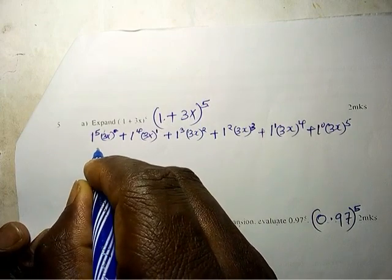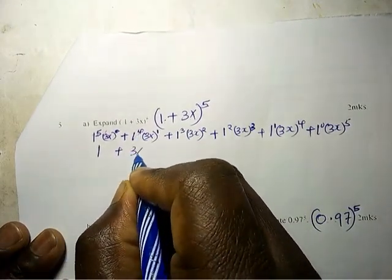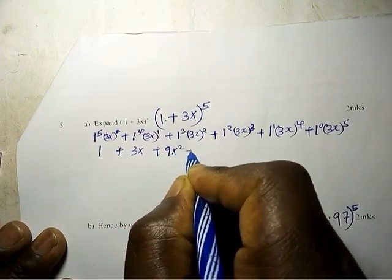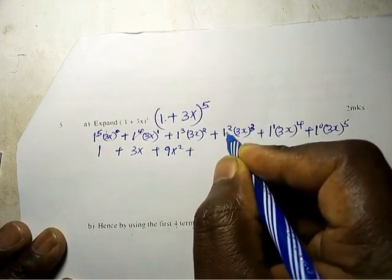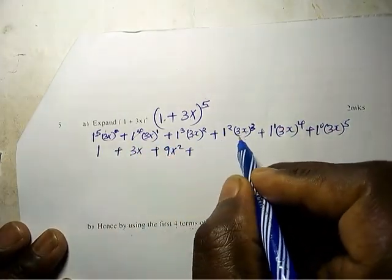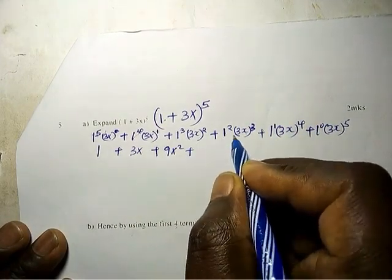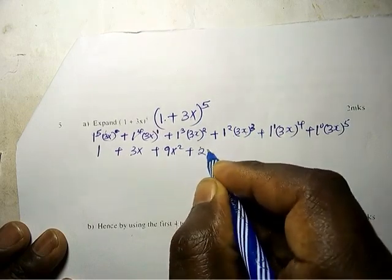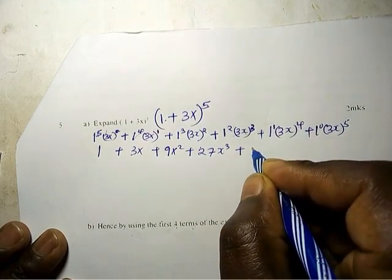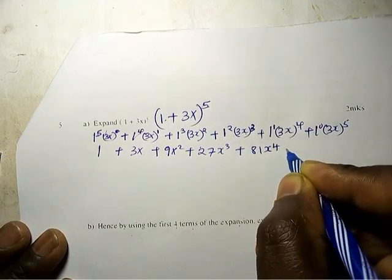So here we are going to have 5C0, that is 1, plus 3x plus 9x^2. Any number to power 1 is just that number, and 1 to any power is just 1. Next is 27x^3 plus 81x^4 plus...